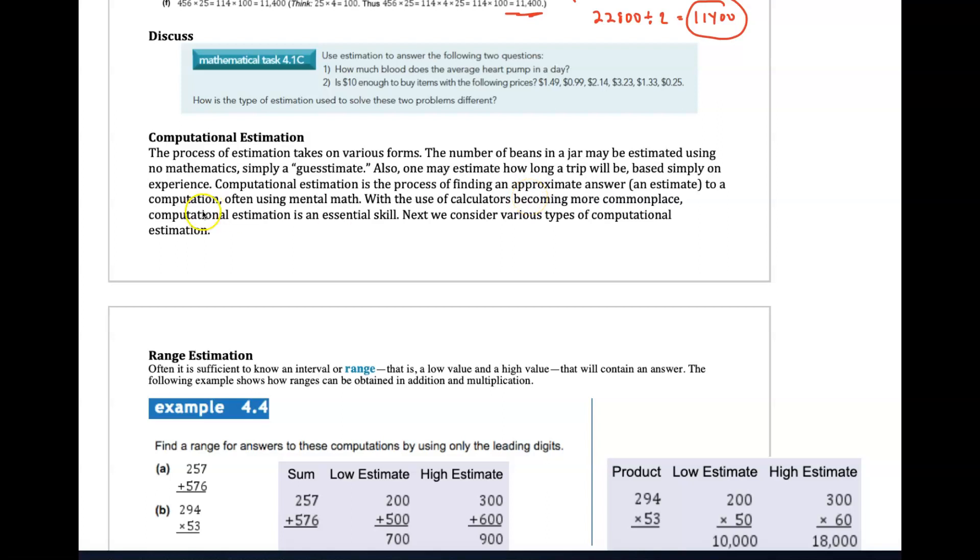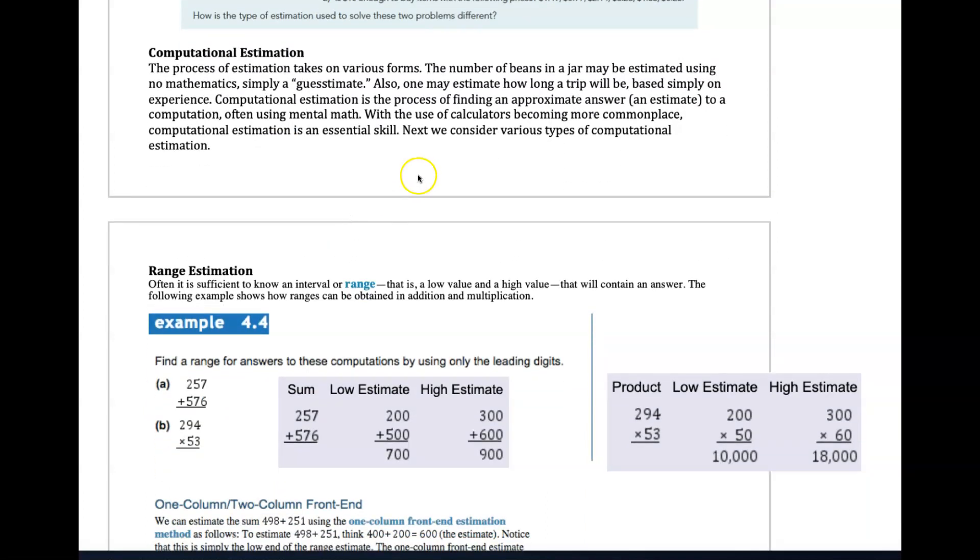Computational estimation is the process of finding an approximate answer to a computation, often using mental math. Estimation becomes an important skill because we let calculators do a lot of the heavy lifting - they do the computations for us. Our estimates are important to make sure that we've entered numbers correctly into a calculator or computer.